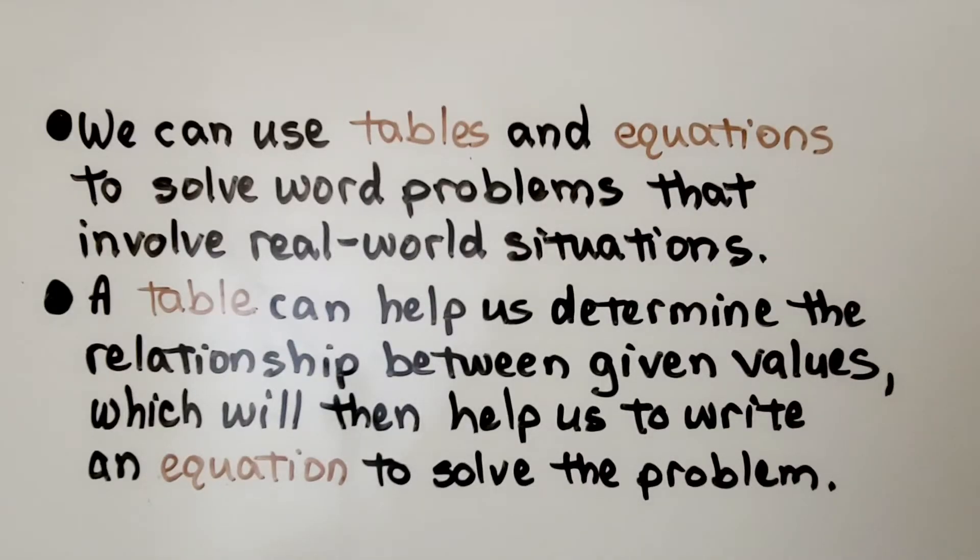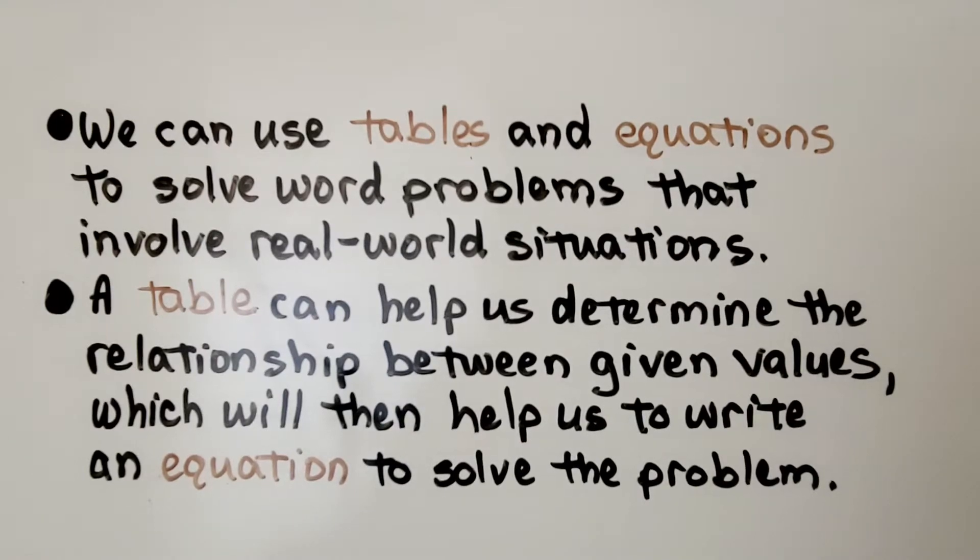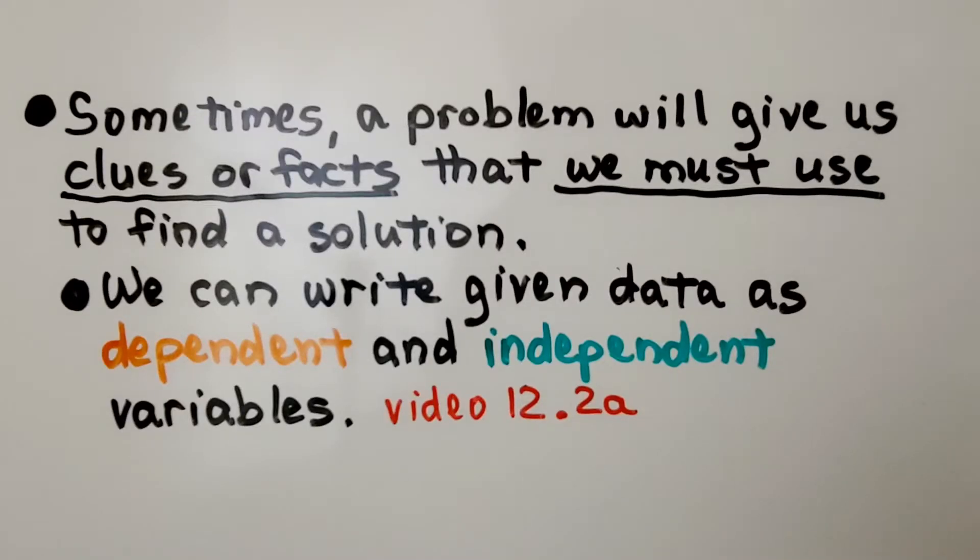We can use tables and equations to solve word problems that involve real-world situations. A table can help us determine the relationship between given values, which will then help us write an equation to solve the problem. Sometimes a problem will give us clues or facts that we must use to find a solution. We can write given data as dependent and independent variables, which we learned about in 12.2a, linked in the description.